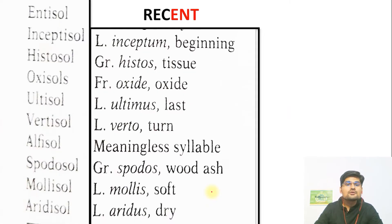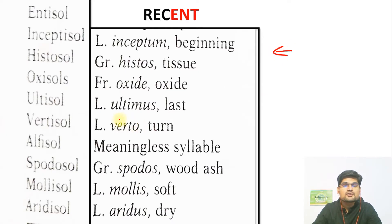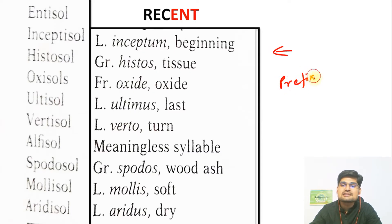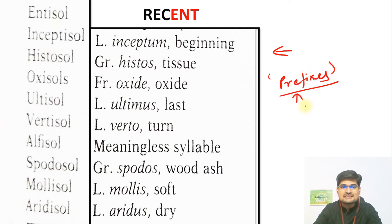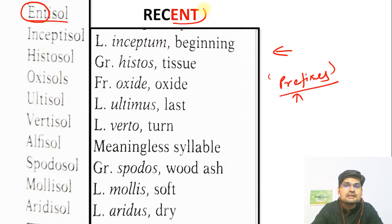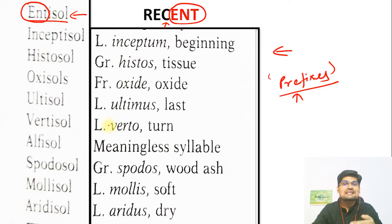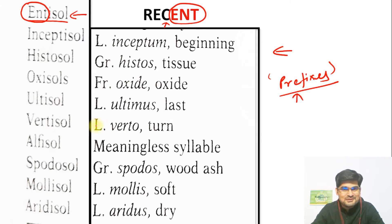If you want to decode how they have named the soils, this is based on a prefix system — the nomenclature, the naming system, is based on prefixes. For example, one soil is called Entisol. The word 'ent' here is coming from the last word of 'recent.' So Entisol is basically recently formed soil — relatively recent in terms of formation in geological time scale.